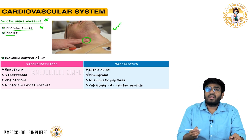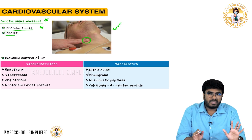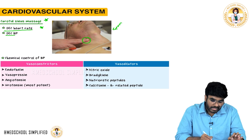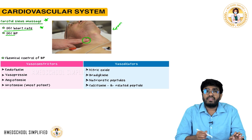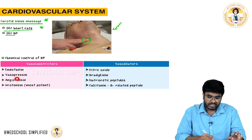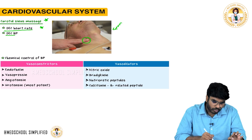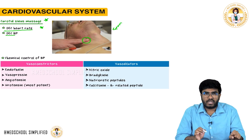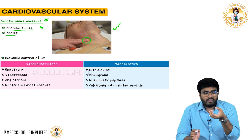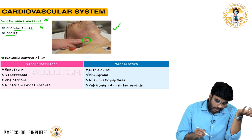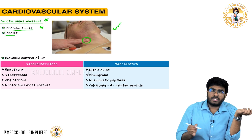There are chemicals that regulate BP. Vasoconstrictors include endothelin, vasopressin, angiotensin, and urotensin. These cause vasoconstriction, which increases BP. The most potent vasoconstrictor is urotensin.